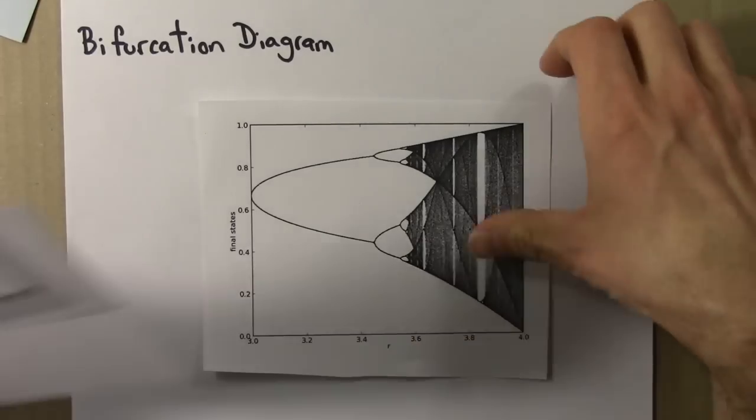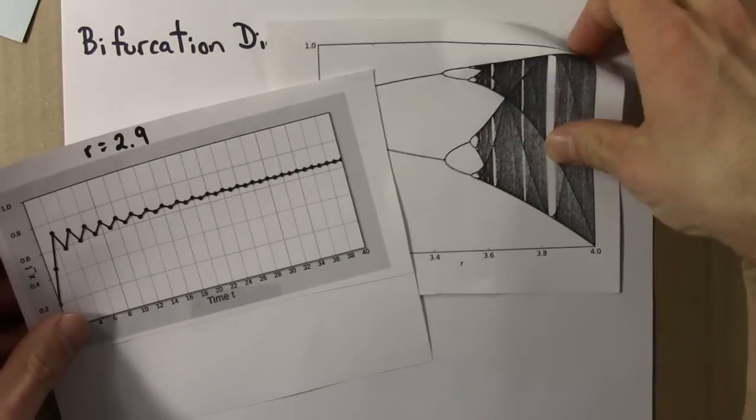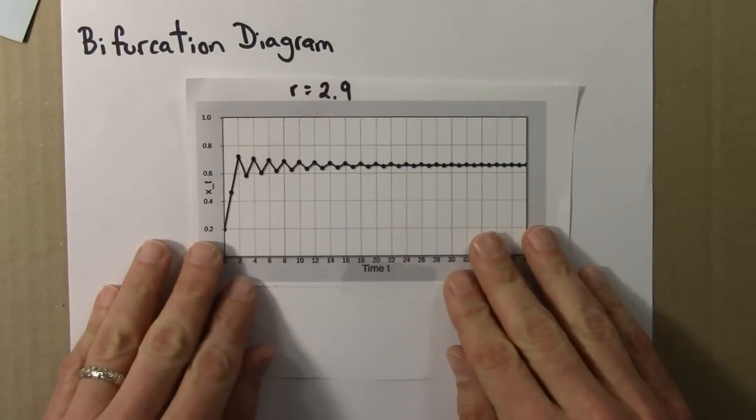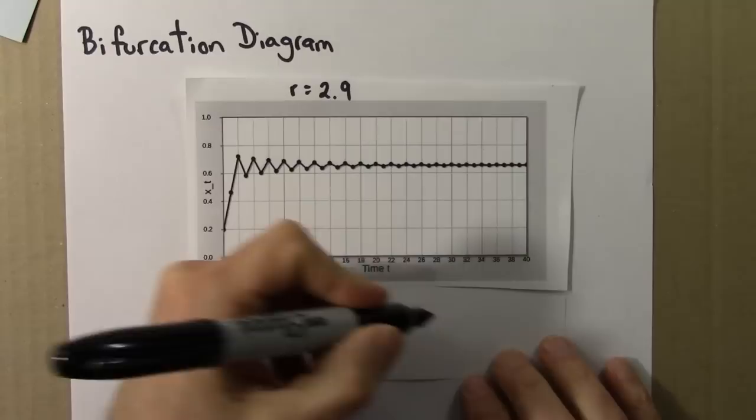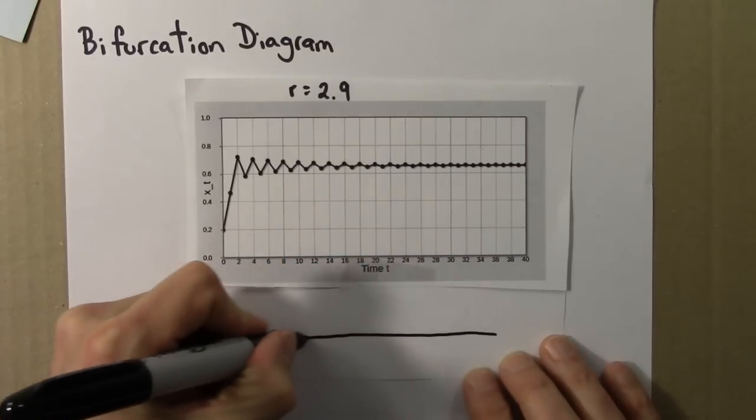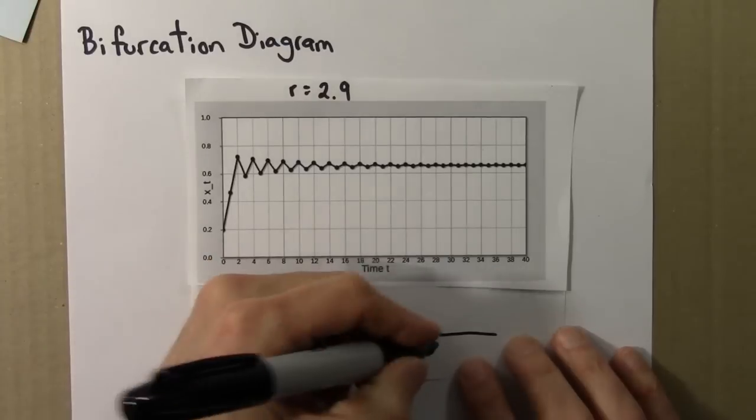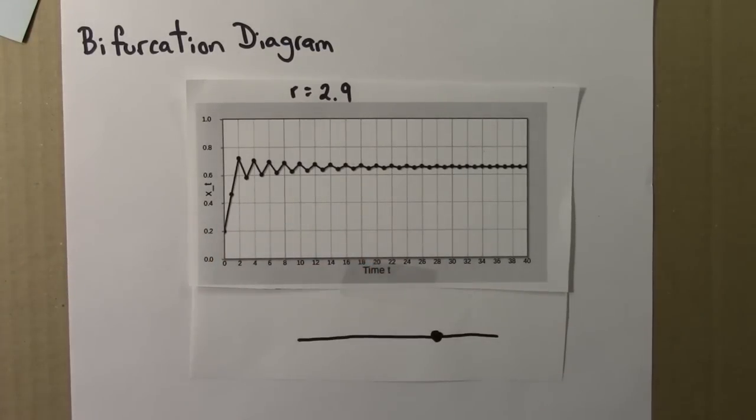So first, let's go back to the parameter r equals 2.9. And I drew the final state diagram like so. There's a single attracting fixed point, it's around 0.65. So I draw it there.